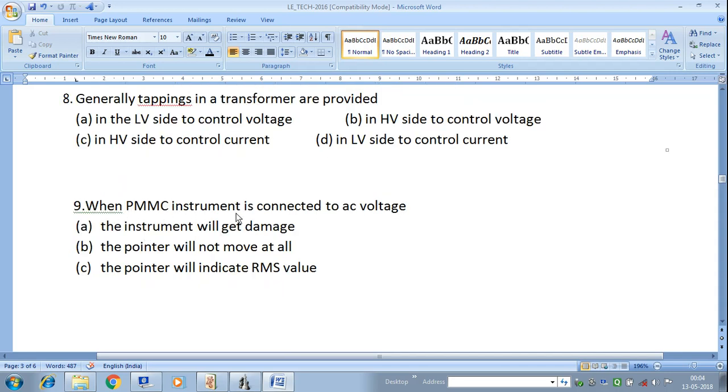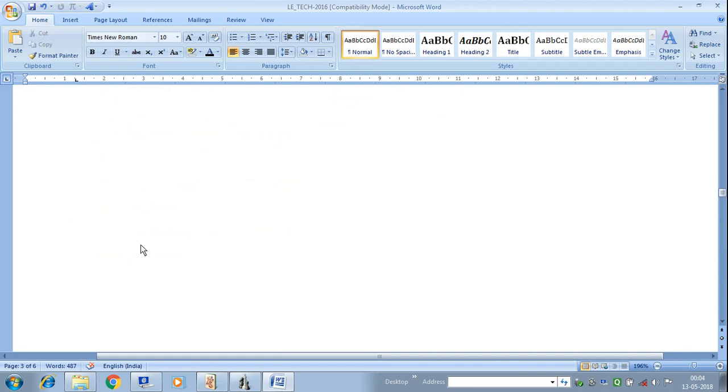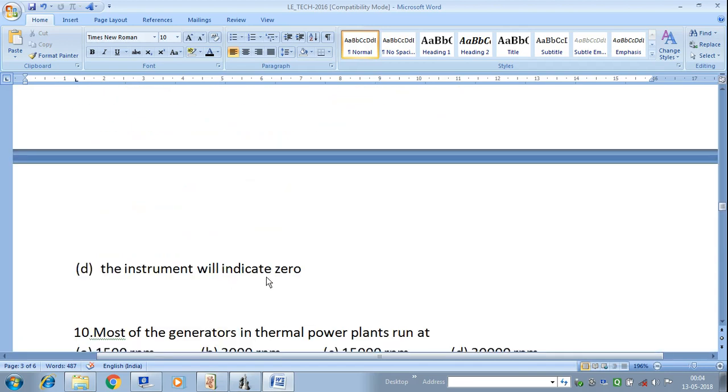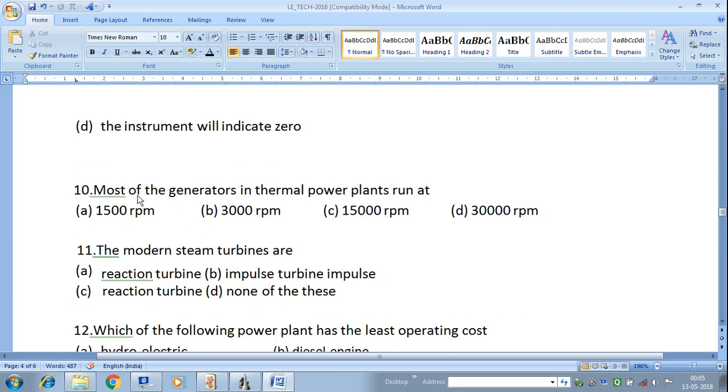Next question: When PMMC instrument is connected to AC voltage, the instrument will indicate zero because in case of AC voltage, two torques are developed. So the net torque is equal to zero. Therefore, the instrument will not rotate in any direction.